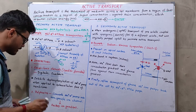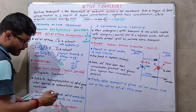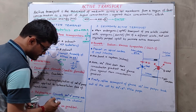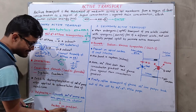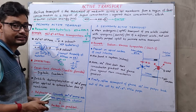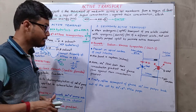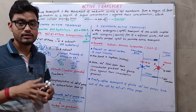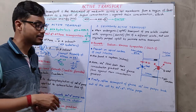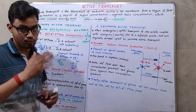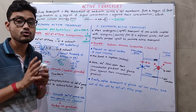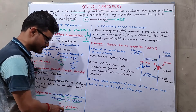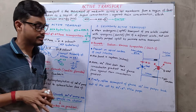Another inhibitor is palytoxin. Palytoxin converts the sodium-potassium pump into a nonspecific ion channel — it destroys the gradient of the plasma membrane, allowing every ion to pass through without control. This effectively destroys the ion gradient around the cell.